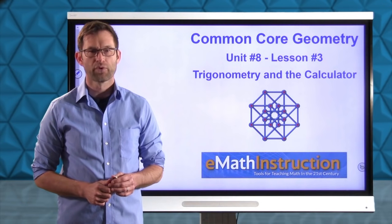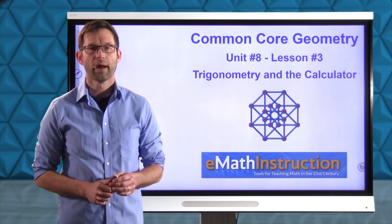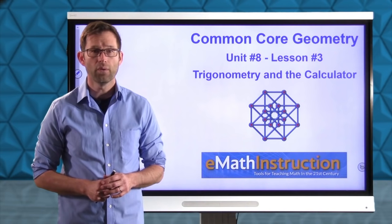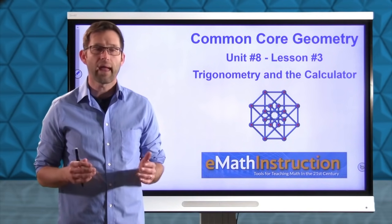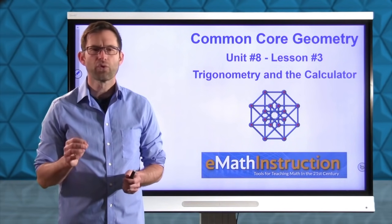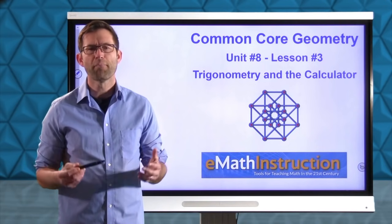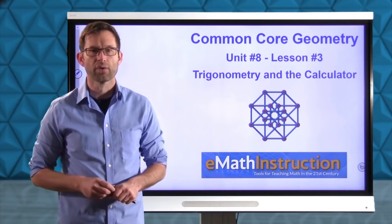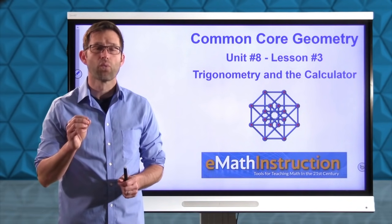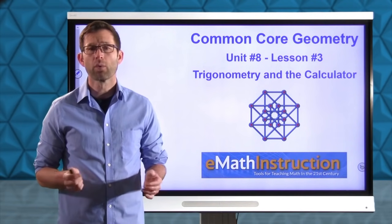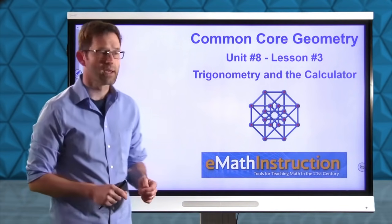Hello and welcome to another Common Core Geometry lesson by EMath Instruction. My name is Kirk Weiler and today we'll be doing unit number eight, lesson number three on trigonometry and the calculator. Make sure that you've got your calculators ready to go. We're going to look at how we can use our calculators to get into right triangle trigonometry. Remember, the trigonometric ratios are all about the fact that right triangles that have the same acute angles are similar to one another, so those ratios of relatively positioned sides only depend on those acute angles.